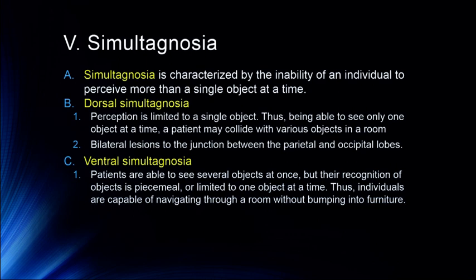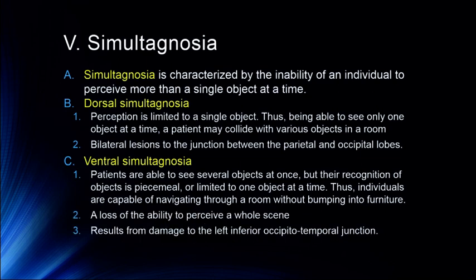Patients with ventral simultagnosia seem to have a loss of the ability to perceive a whole scene — they can see each piece but can't put it all together. This is usually due to damage to the left inferior occipital-temporal junction. That's why this is a more ventral simultagnosia, whereas the parietal-occipital junction is more dorsal simultagnosia. This is oftentimes accompanied by other severe symptoms in what's called Balint syndrome, which includes optic ataxia and an inability to move the eyes.